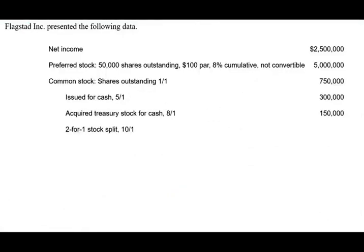Let's take a look at this exercise to make sure we know how to compute the weighted average number of shares outstanding. We have the data for this company. You might see this in a CPA simulation on the exam day, or you might see this in a multiple-choice. A problem like this might appear as a CPA simulation, or they might ask you about a piece of it — for example, to compute only the weighted average number of shares, or to compute EPS.